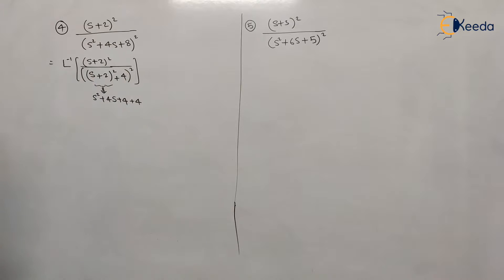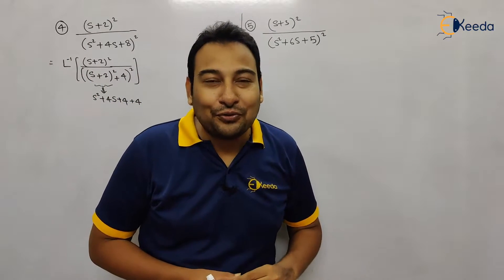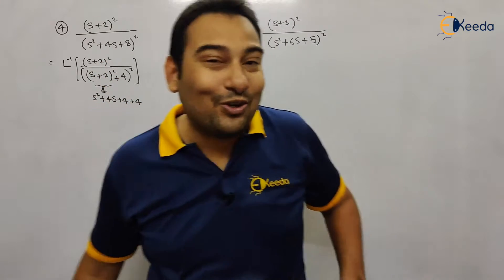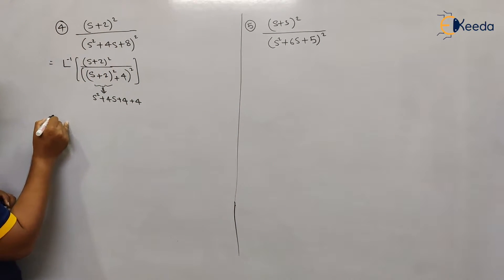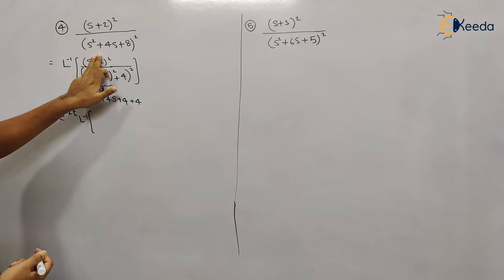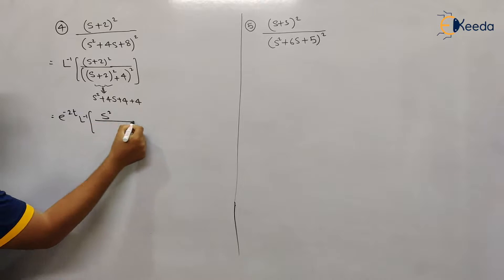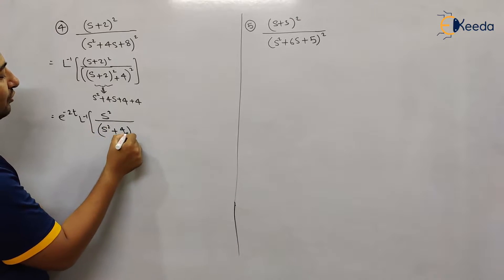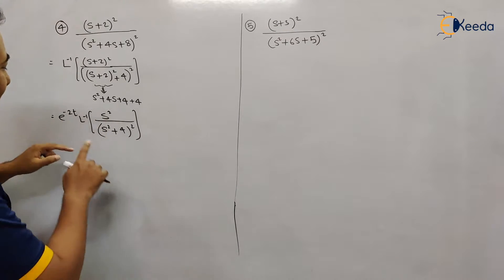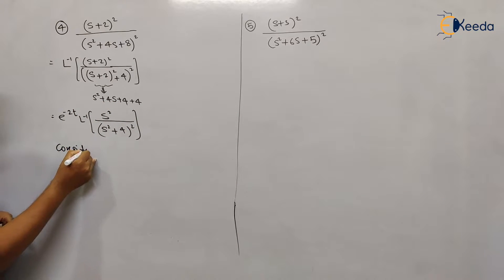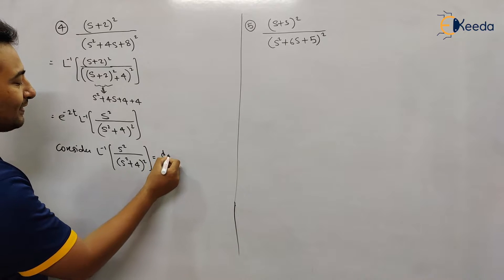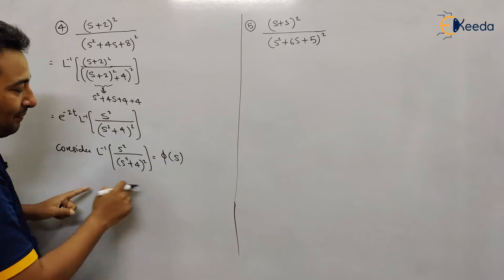Now can you see the shifting in this problem? Yes, it's clearly visible — s is shifted by plus 2. So e^(−2t) will come outside, and we take the Laplace inverse of the remaining term. Forgetting about the shifting, what we see is s² upon (s² + 4), the whole square.